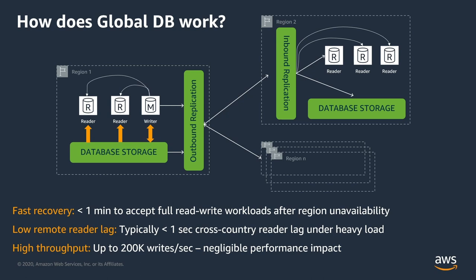Because this is all physical replication, the remote reader lag is very, very low. Our tests have shown that even across regions like US East to US West, we have seen less than one second reader lag. The throughput on both sides is high — essentially what you come to expect of an Aurora database. Because the replication is happening on the storage layer, the reader and writer nodes don't have to do any extra work, so there's no additional performance impact, and you continue to get the high throughput that you come to expect.